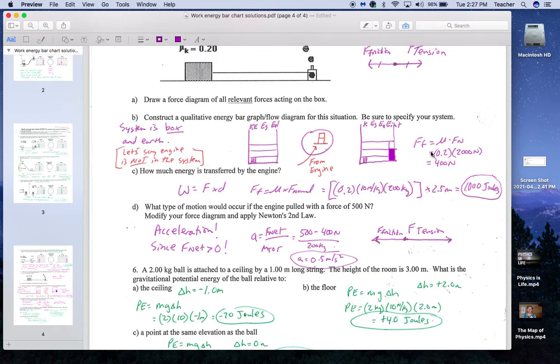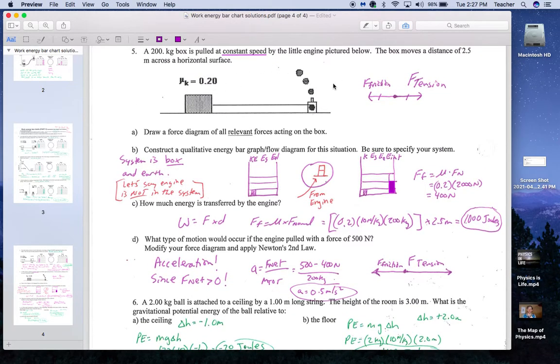The force of friction is the coefficient of friction times a normal force. 0.2 times 2,000 newtons. M times G, 200 kilograms times 10 newtons per kilogram times 0.2. That's 400 newtons of force. Multiplied by that distance is 1,000 joules. So that's how much energy is transferred by the engine.